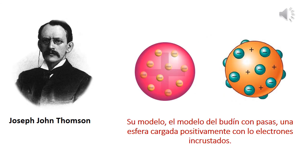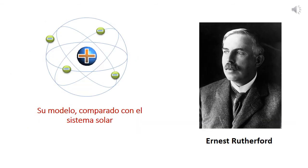Joseph John Thomson realizó experimentos con rayos catódicos, determinando la existencia de cargas negativas dentro del átomo, a las que llamó electrones. Su modelo propuesto fue el famoso budín de pasas, en el cual el átomo era una partícula cargada positivamente con partículas negativas incrustadas. Rutherford estudió la naturaleza de las radiaciones y concluyó que se emiten tres rayos: alfa, beta y gamma. Descubrió el núcleo del átomo; su modelo es comparado con un sistema solar, con una parte central cargada positivamente y los electrones alrededor.